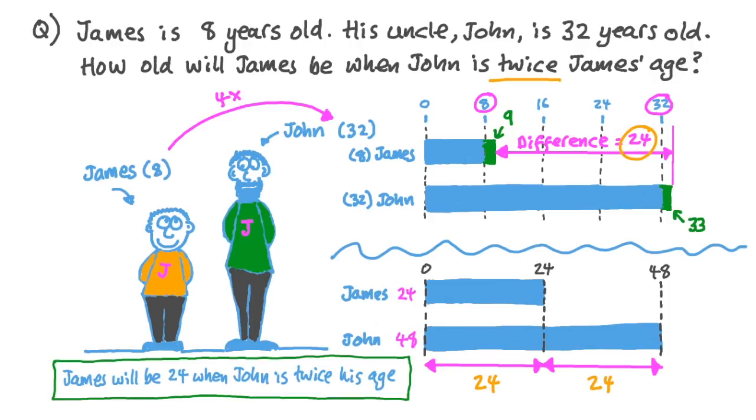Now remember, the question was actually how old will James be when John is twice James's age? So the answer is James will be 24 when John is twice James's age. This visual representation of the ages with the bars created a real aha moment, when you can see that one bar here was half the length of the other bar, and you knew that the difference was 24. With this approach, anyone can solve the problem.